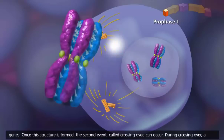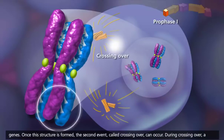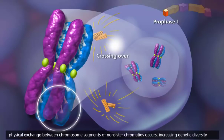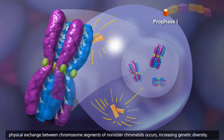Once this structure is formed, the second event, called crossing over, can occur. During crossing over, a physical exchange between chromosome segments of non-sister chromatids occurs, increasing genetic diversity.